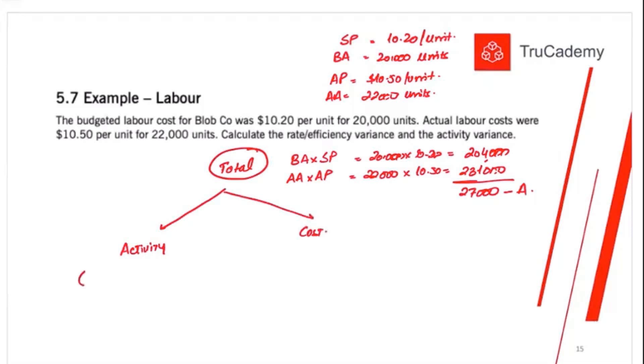Activity variance. Again, compare the activity. Budgeted activity minus the actual activity into the standard price. Budgeted activity is 20,000 units. That what labor was supposed to produce. Actual activity is 22,000. What the units actually produced. And standard price that we were supposed to pay to the labor 10.20. So 20,000 minus 22,000 into 10.20. So this is 20,400. Is it favorable or adverse? It cost 20,400 more. So it's adverse.